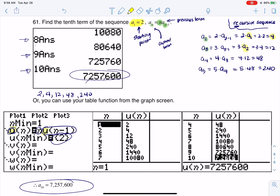And then if you go into your table menu, you can actually start to see all the values of your sequence. And we can go all the way over to 10 and get that 7,257,600 number. All right, thanks so much everyone.